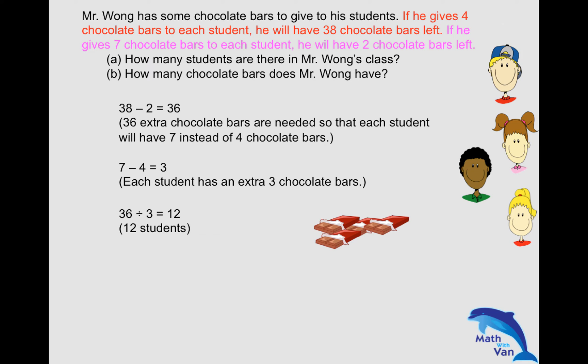Using either scenario, you can work out the number of chocolate bars that Mr. Wong has. I would suggest using scenario one to work out the answer, then scenario two to check. So let's use scenario one: four chocolates, 12 students — 12 times four gives me 48. Remember, he did not use up all the chocolates, so you have to add 38. So the answer is 86.